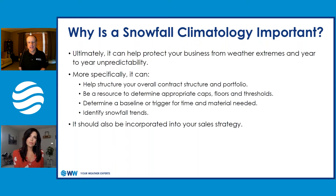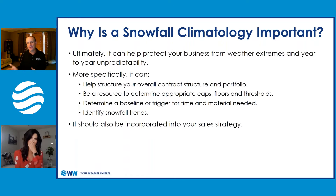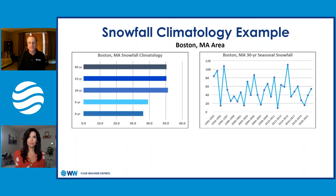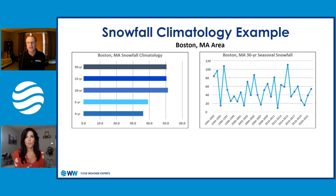This goes hand-in-hand with when our forecasts come out. We do our early winter forecasts and take all this kind of data and put it towards what may happen for the upcoming year. History and weather sometimes does repeat itself, but we do see trends as meteorologists. Here's Boston's climatology as an example of what we have with our Snowtistics — it'll give you your 30-year, 15-year, all the way down to your 3-year average of total snowfall, and also your seasonal snowfall broken down each year.